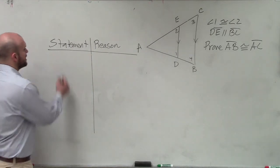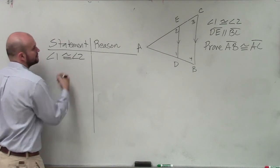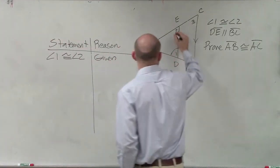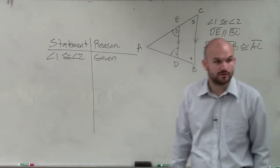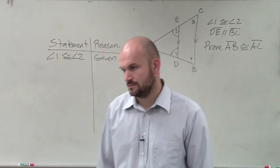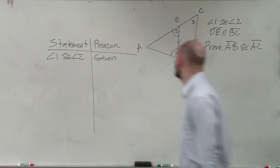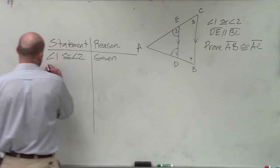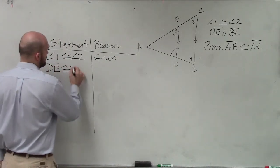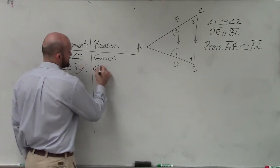So let's write down what we have. We know that angle 1 is congruent to angle 2 — that's given. The next thing is we know that DE is parallel to BC — that's also given.